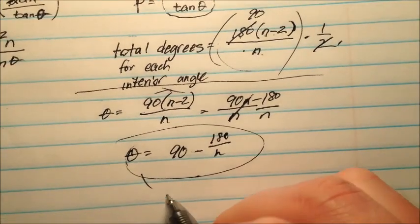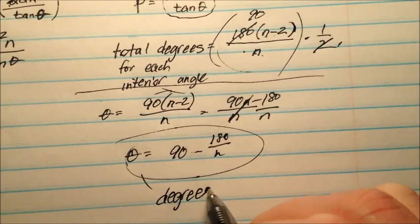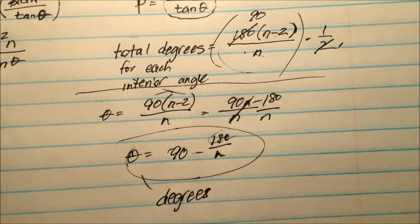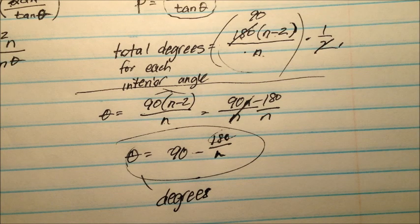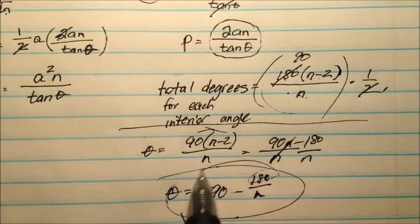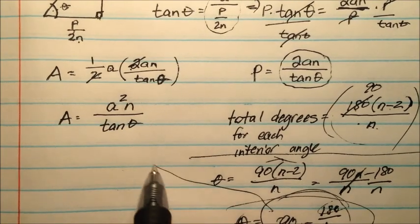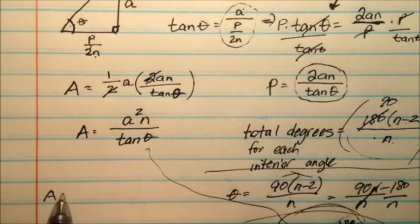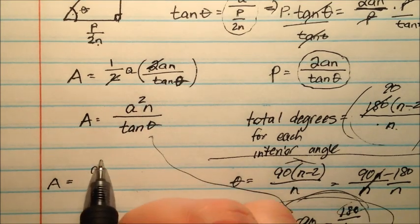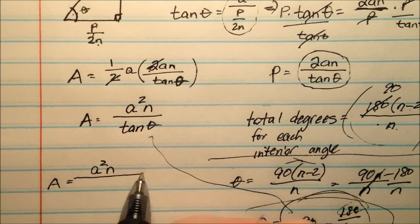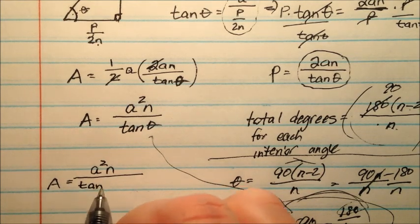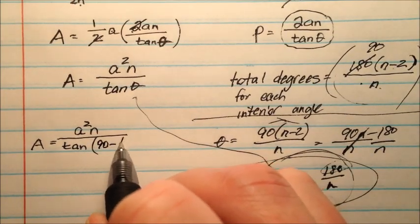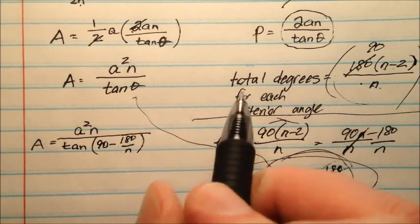So this theta is going to be measured in degrees. Since we have our 180 and 90, there's going to be degrees. And this n is going to be the number of sides that my regular polygon has. So I could take this value that's equivalent to my theta and I could substitute it in my theta. So I could say the area of a regular polygon is going to be a squared times n all over, not times, all over, this tangent of, and it's going to be this 90 minus 180 divided by n.